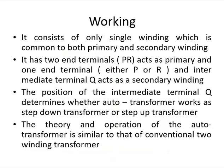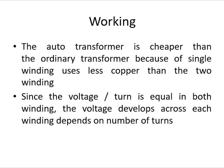The autotransformer consists of only a single winding common to both primary and secondary. It has two end terminals acting as the primary and one end terminal with intermediate terminal Q acting as the secondary. The position of intermediate terminal Q determines whether the autotransformer works as a step-down or step-up transformer. The operating principle is similar to that of a conventional two-winding transformer. The current in portion QR in a step-down autotransformer is the vector difference of currents I2 and I1. Since voltage per turn is equal in both windings, the voltage developed depends on the number of turns.